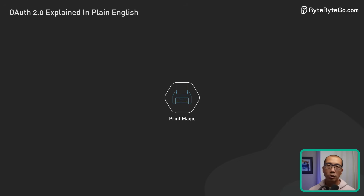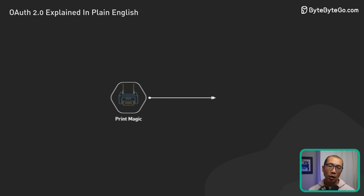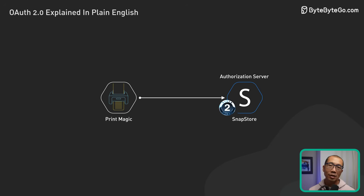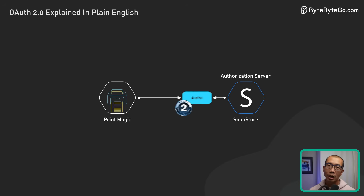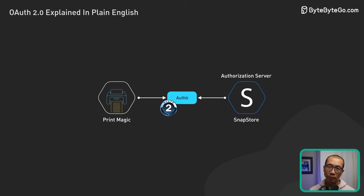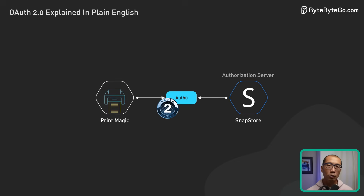The authorization server could be a part of SnapStore or an external identity provider, and is responsible for handling the OAuth 2 process.